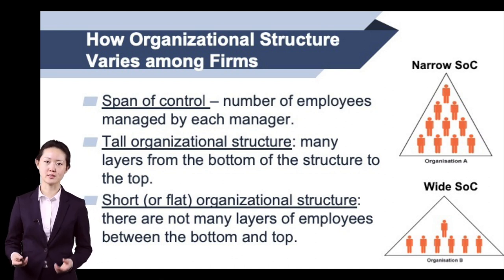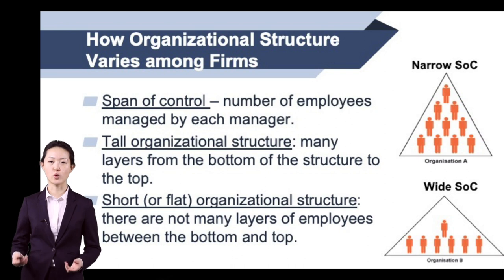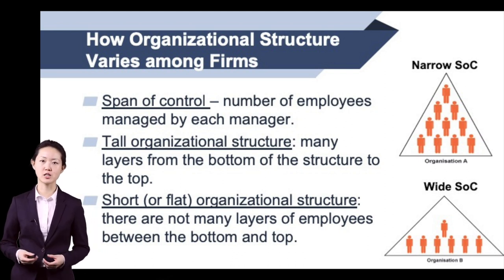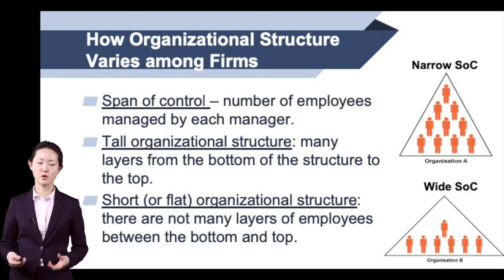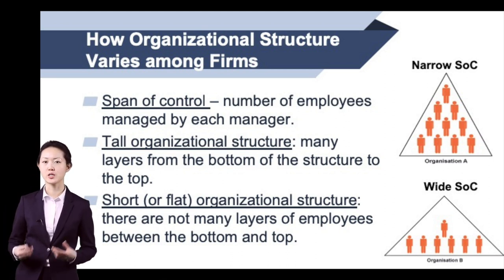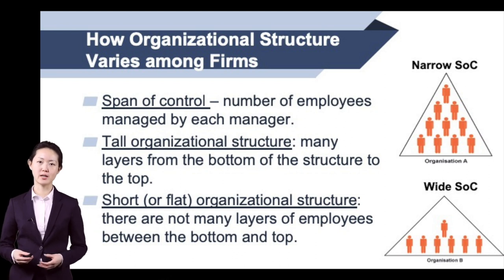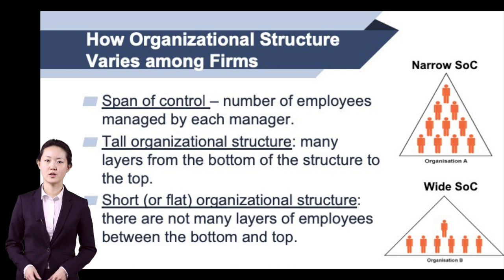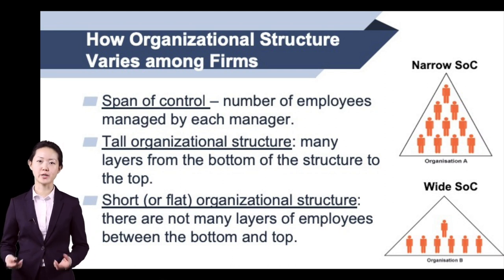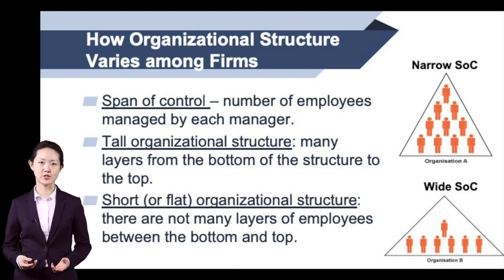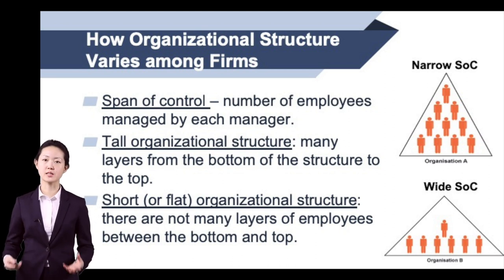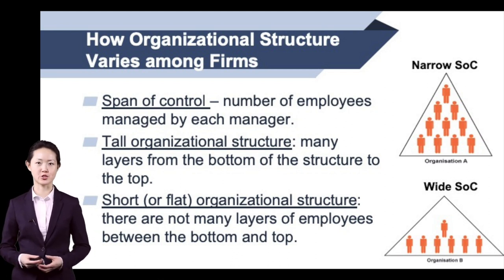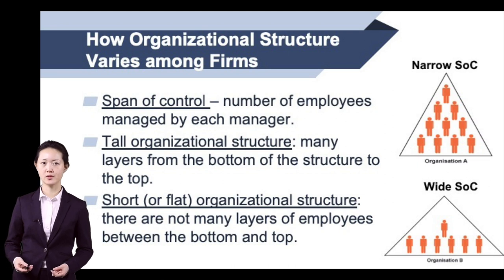The organizational chart at the bottom reflects the wide span of control in which the president directly oversees the work of all of the employees. Such a wide span of control is more typical for firms in which employees are in similar positions and therefore can be easily monitored by a single manager. Many firms that have wide span of control tend to also have a flat organizational structure because it doesn't require many layers. Conversely, firms that need to use narrow span of control tend to have a tall organizational structure with many layers.